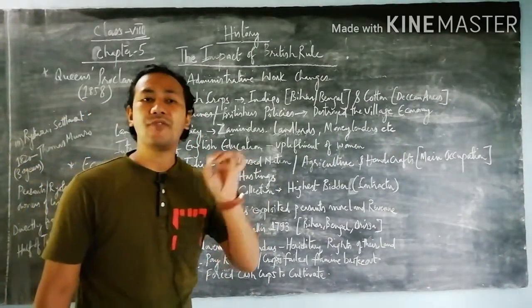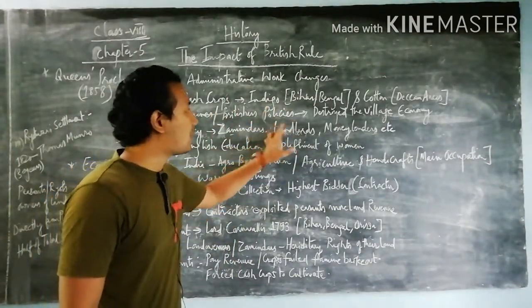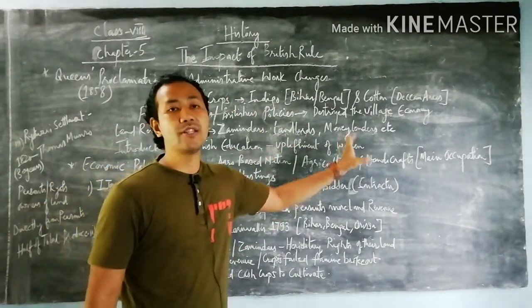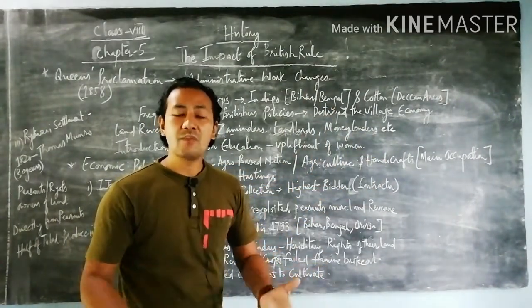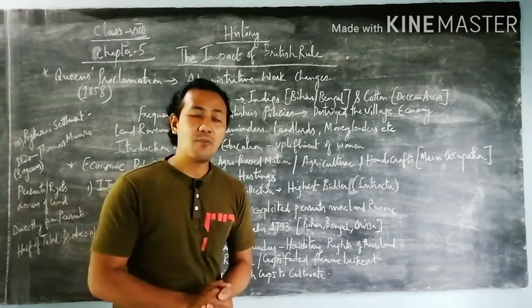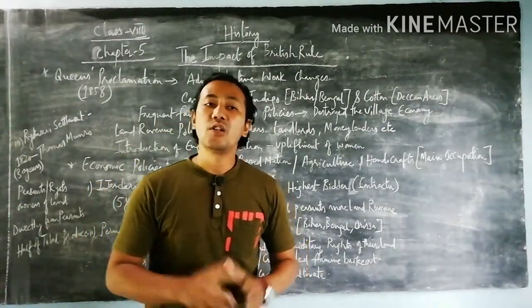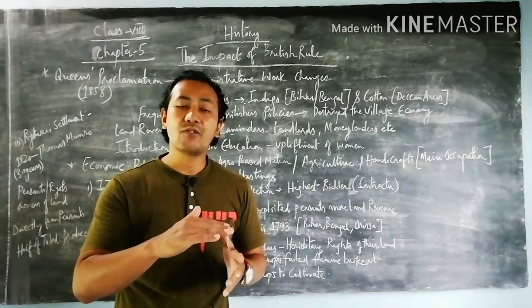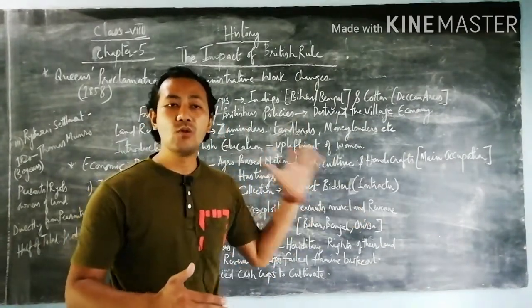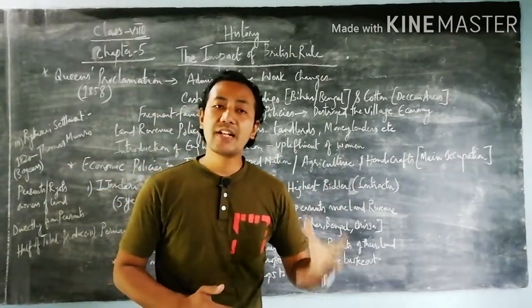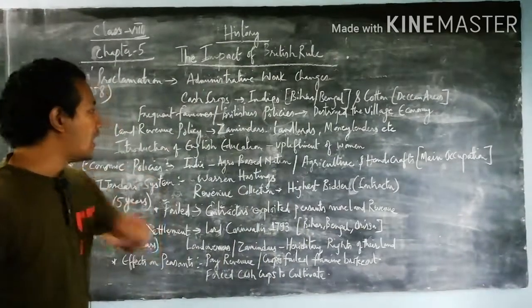Next we talk about frequent types of famines and the British imposing laws and policies that destroyed the economic system of village people, farmers, and peasants. Through those policies, the common people could not go with the same flow and had to face lots of difficulties.